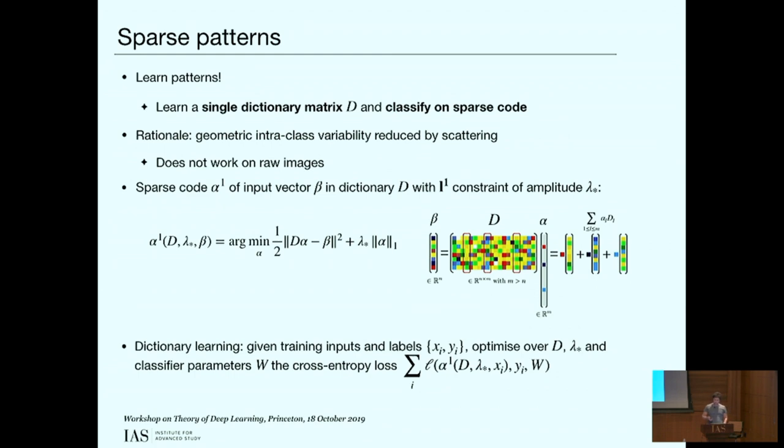The question is what is missing? What we showed in this work is what is missing is supervision and learning class informative patterns. The rationale is that now that we have reduced intra-class variability with the scattering, we can try to learn a dictionary of patterns, compute a sparse code in the dictionary, and classify on the sparse code. It would not be possible directly on raw inputs which have too much variability.